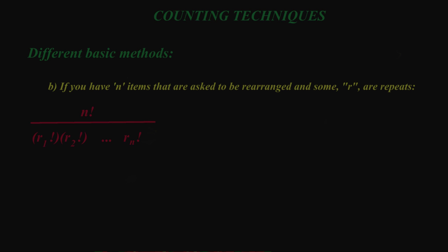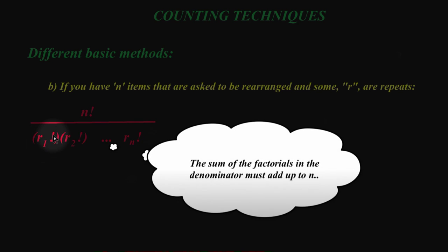N factorial is the total number, and r1 factorial will be however many times the first item that's repeated is repeated. If the first item that's repeated is repeated four times, that would be a 4 factorial. If it's repeated twice, that would be a 2 factorial. Then the next observation that's repeated, and you keep doing that for all the repeats in the denominator.